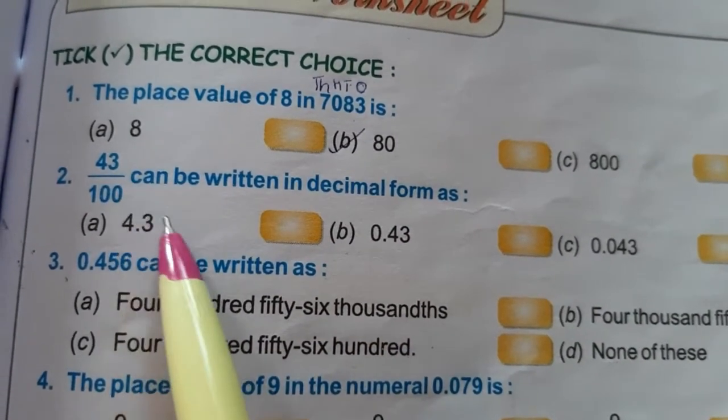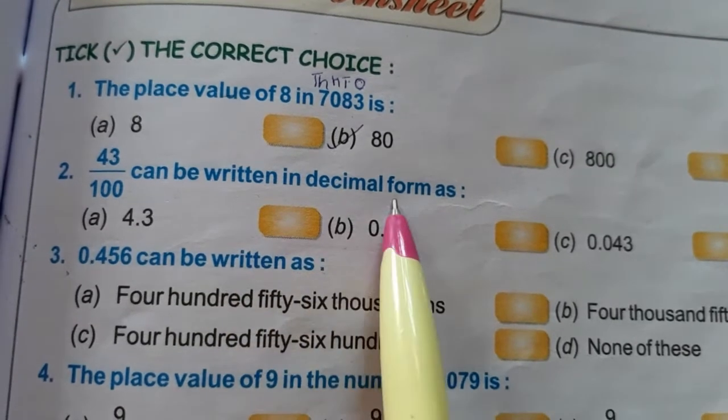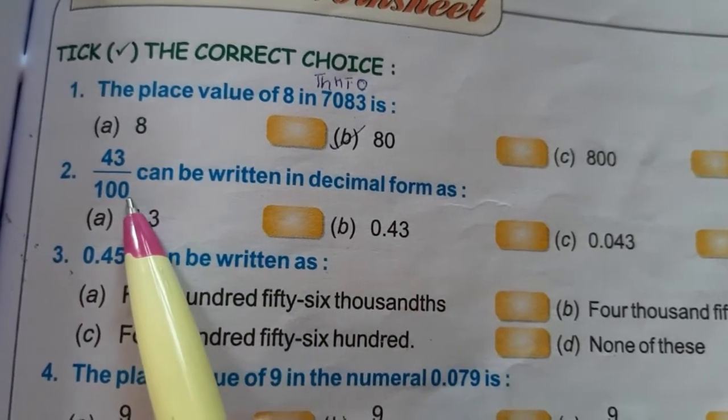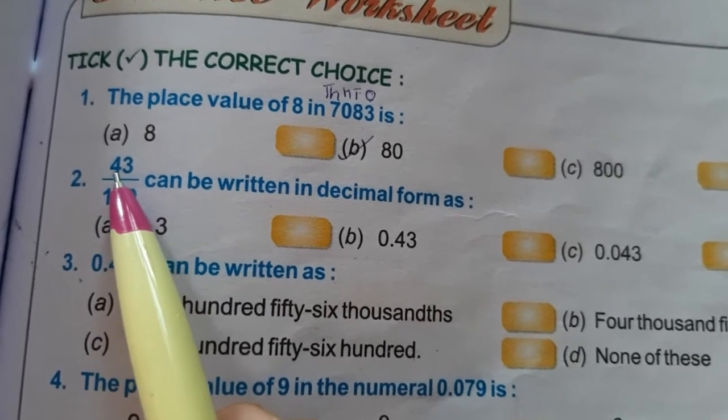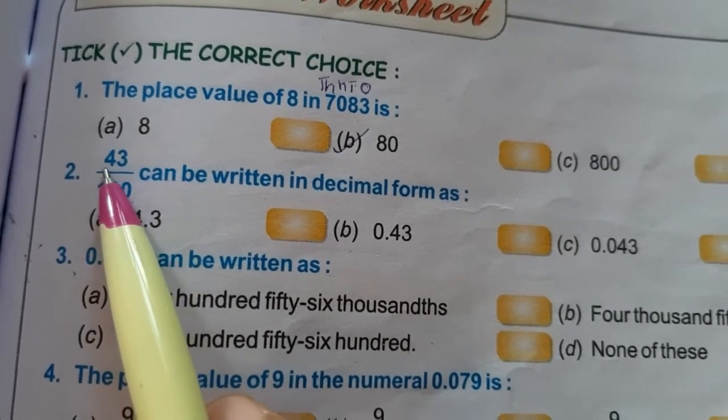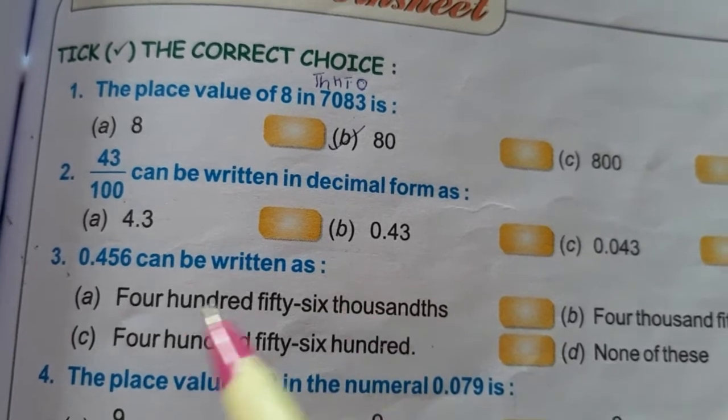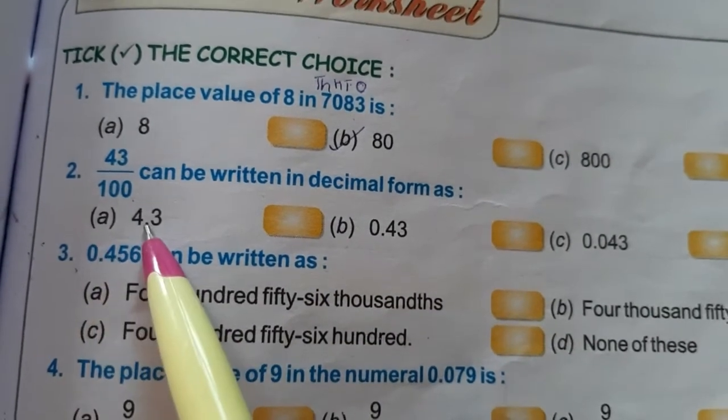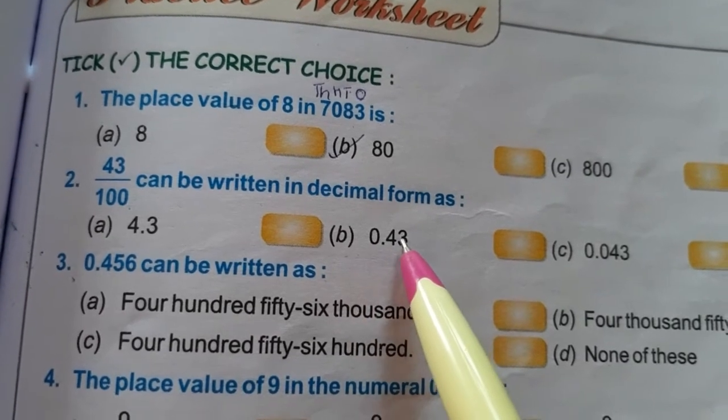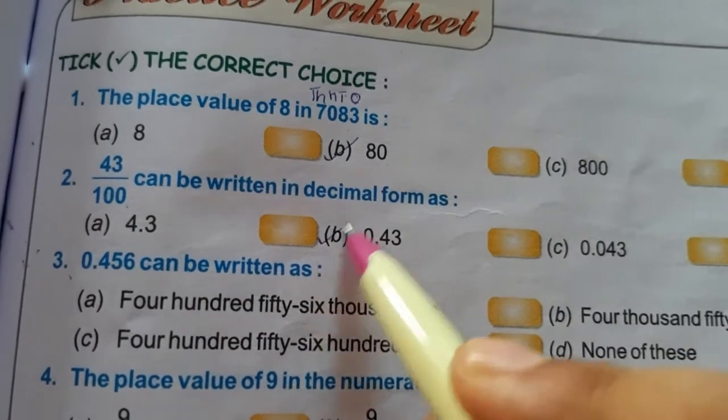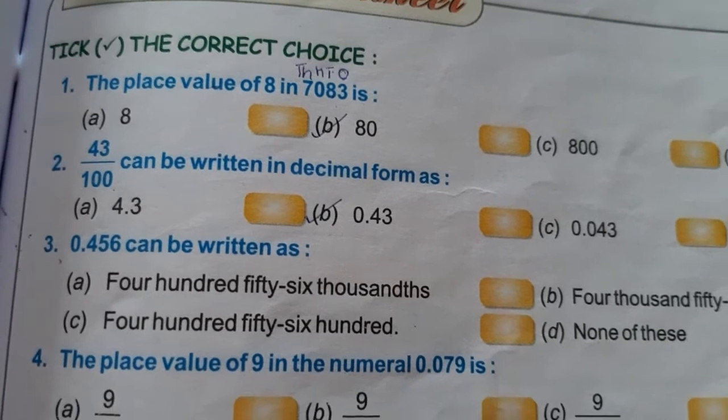Next is 43 by 100 can be written in decimal form. What we have to do? We have to just put a decimal after 2 digits. So here 4.3 won't be the answer. The answer will be 0.43. After 2 digits we have to put the decimal. B option is the answer.